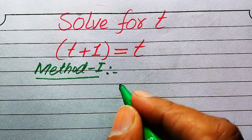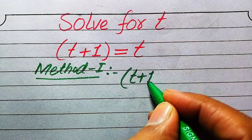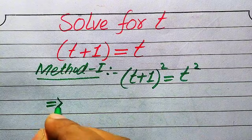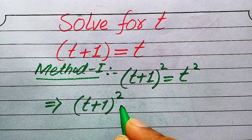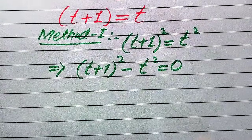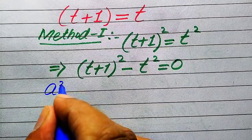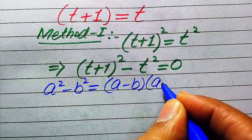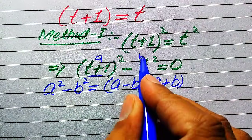So here we move toward the solution of the first method. In the first method we need to take squaring on both sides, and when we take squaring on both sides it will be written as (t+1)² equals t². And further in the next step we move t² from the right hand side to the left hand side, so it becomes (t+1)² minus t² equals zero. Now in the next step we need to use the algebraic formula: a² minus b² equals (a minus b)(a plus b), where the base of the first term is our a and the base of the second term is our b.